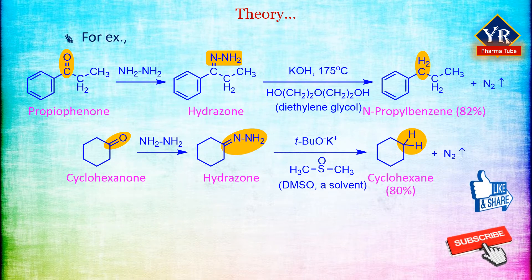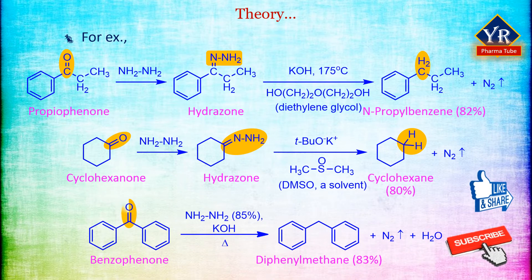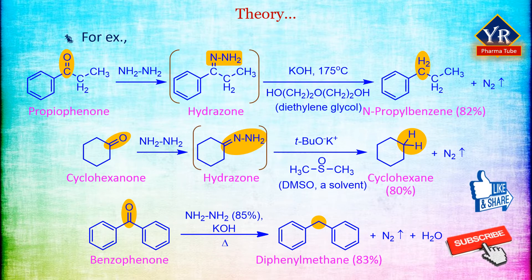The yield is about 80%. In the third example, benzophenone can be reduced to diphenylmethane by Wolf-Kishner reduction. Note that the intermediate hydrazone derivative has not been shown in the reaction. All the reactions proceed via a hydrazone intermediate that is not isolated during the reaction. Further, the Wolf-Kishner method reduces all ketone carbonyl groups, not just those adjacent to benzene rings.